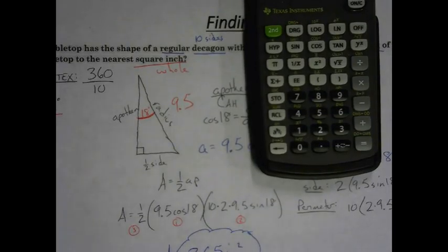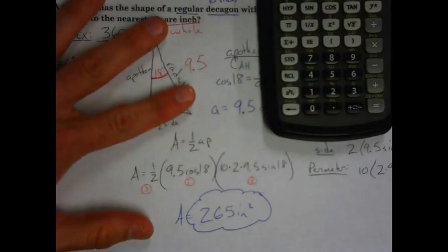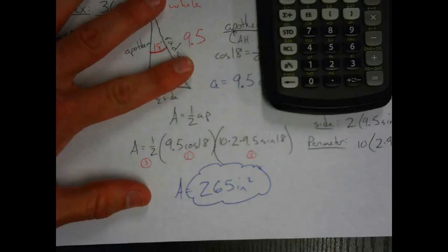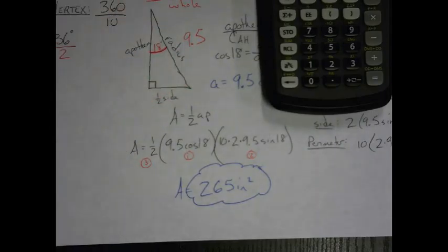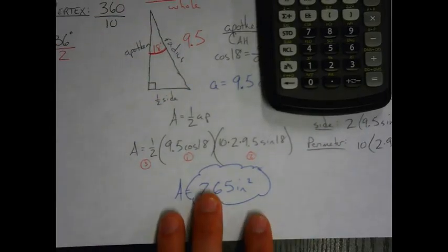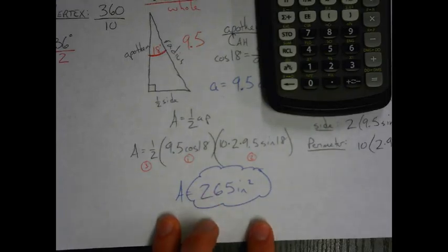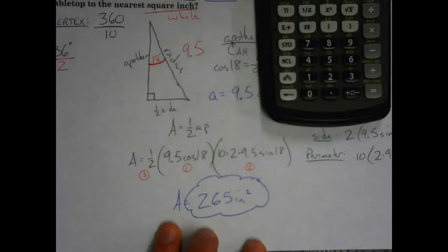And that is how we use trigonometry in finding the area of polygons. That is it, folks, for the unit on the area of polygons. I hope you've enjoyed it. We'll come back with some more fun geometry later. In the meantime — study, study, practice. Peace out.